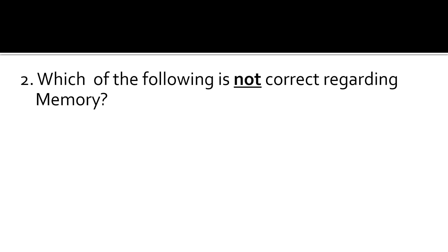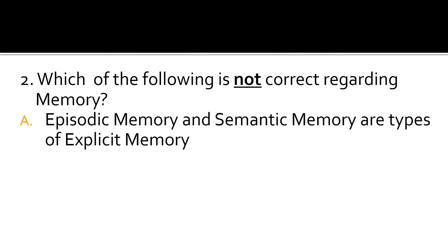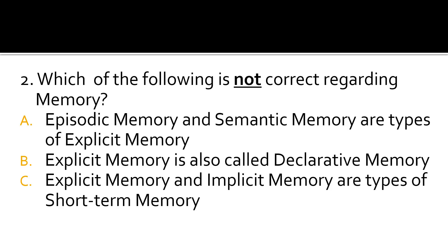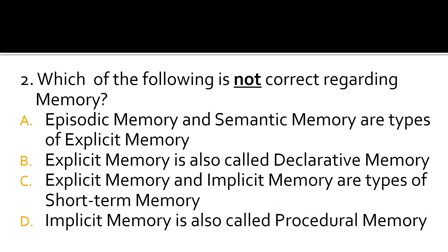Question 2. Which of the following is not correct regarding memory? A: Episodic memory and semantic memory are types of explicit memory. B: Explicit memory is also called declarative memory. C: Explicit memory and implicit memory are types of short-term memory. D: Implicit memory is also called procedural memory. The correct answer is C.